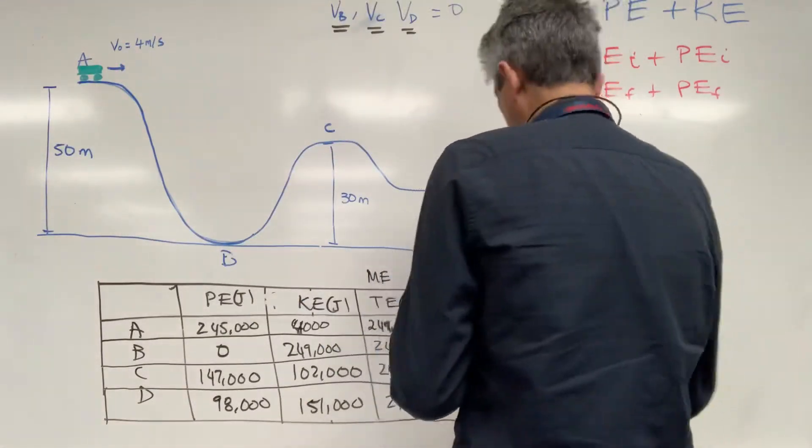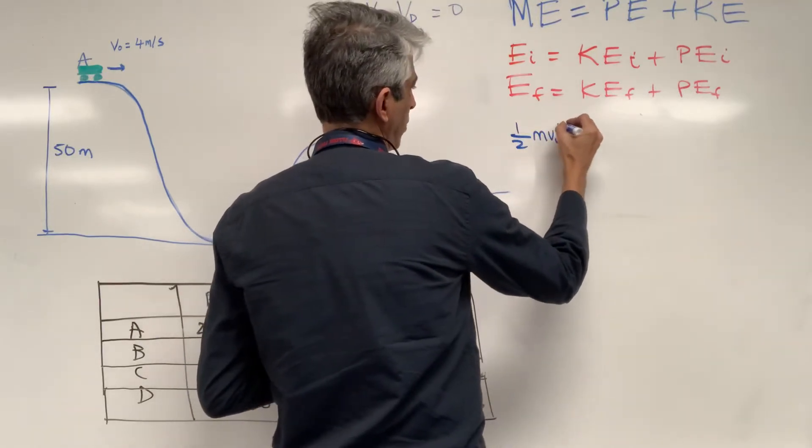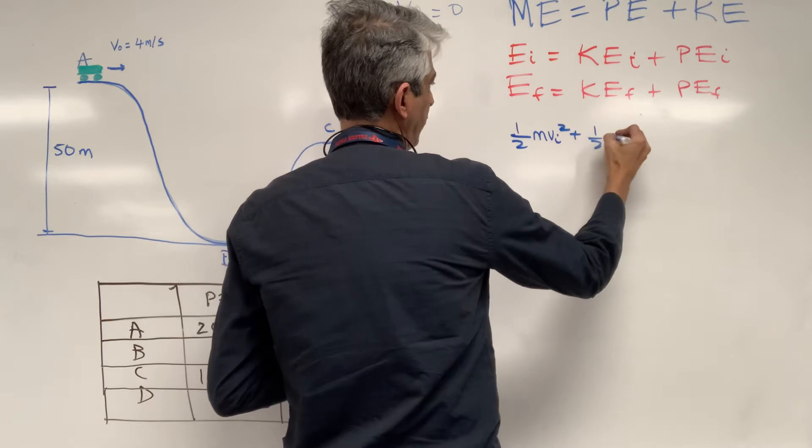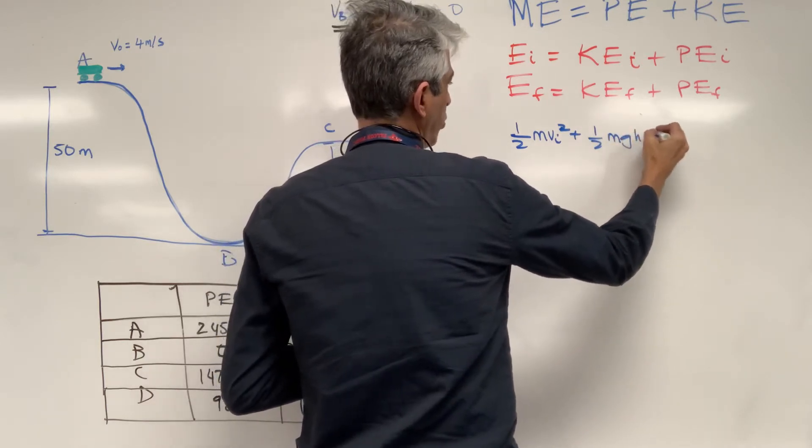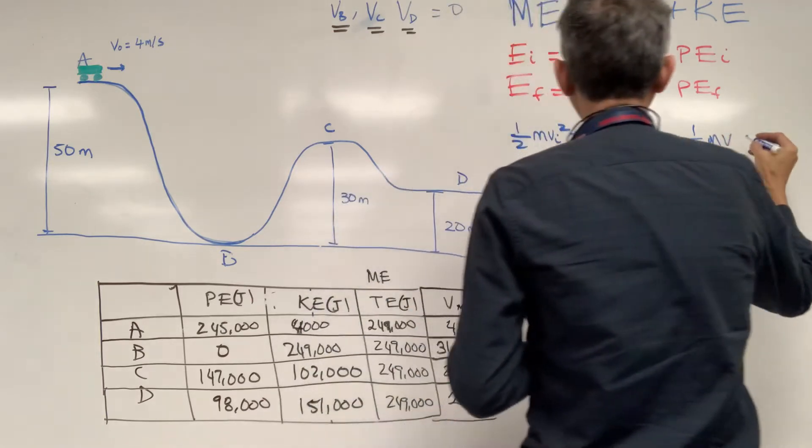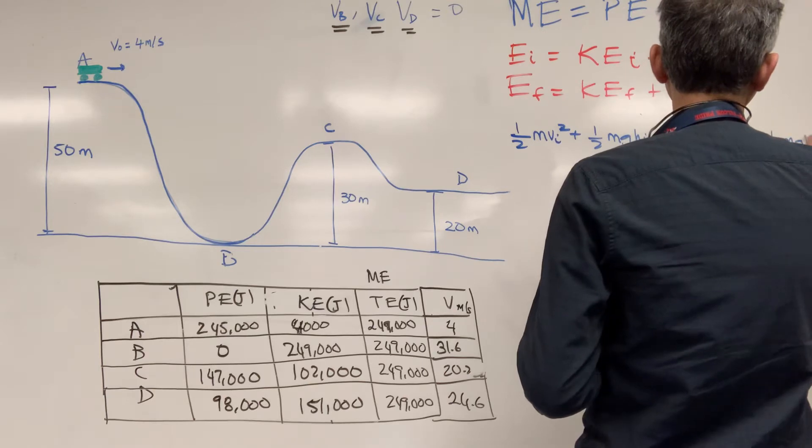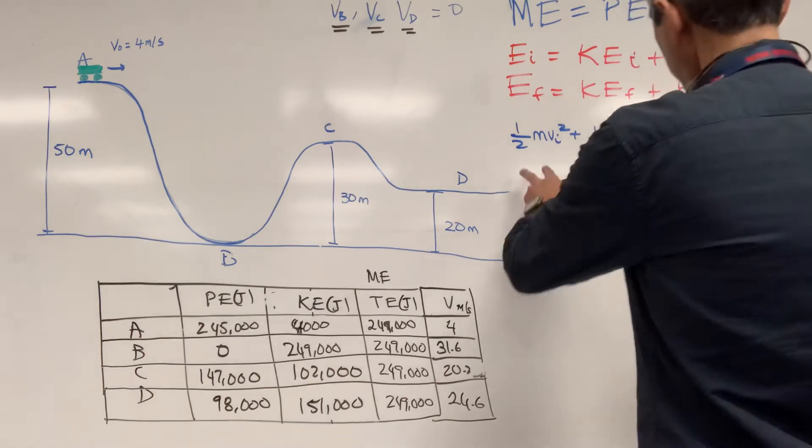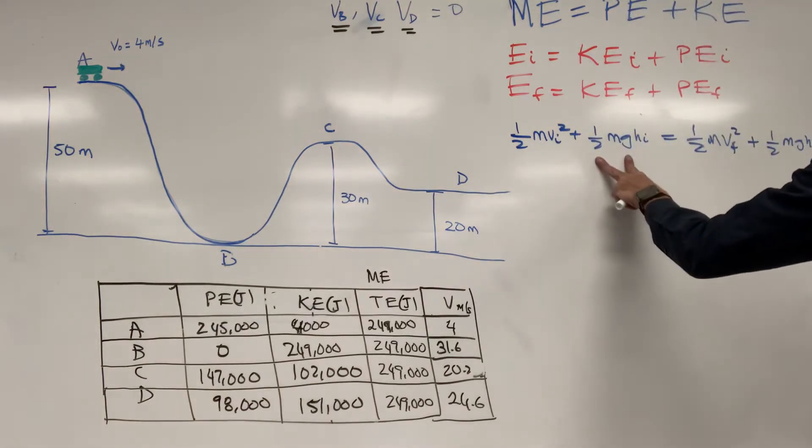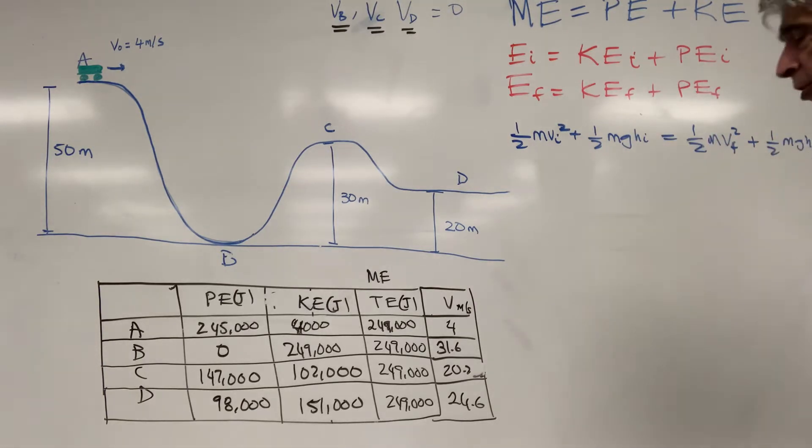So if I first start off with my initial energy being one-half mv initial squared plus mgh initial is equal to one-half mvf squared plus mgh final, that's just saying initial kinetic energy plus initial potential energy has to equal final kinetic energy plus final potential energy.